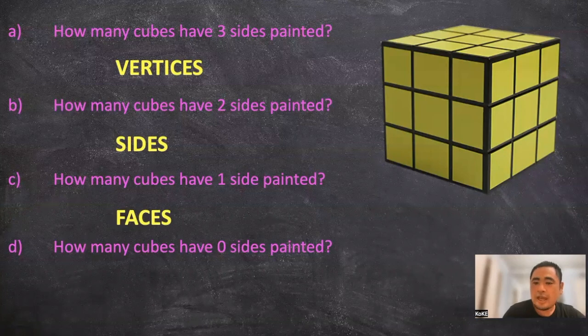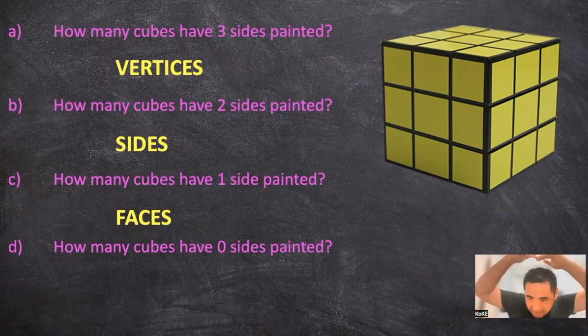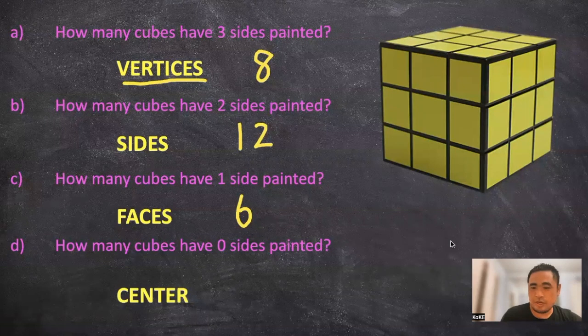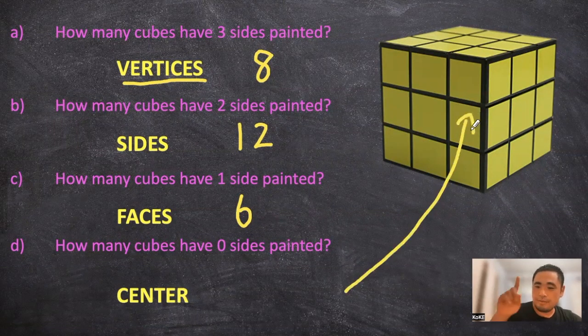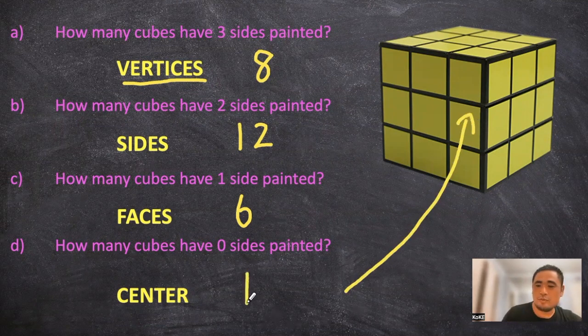And D, how many cubes have 0 sides painted? For this one, if we focus on the center of the cube, there will be 1. So the answer is 1.